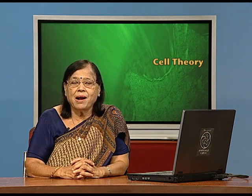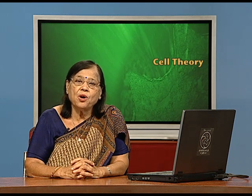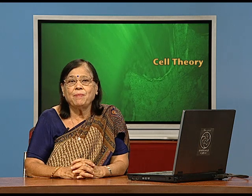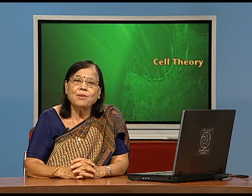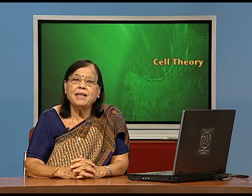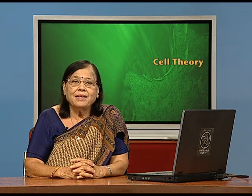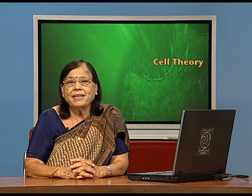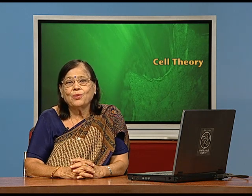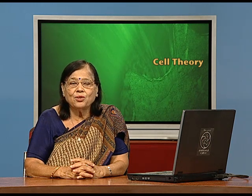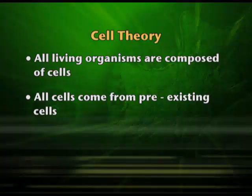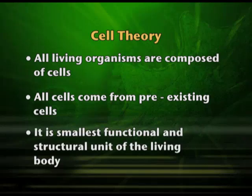This part of the theory discarded the original theory of spontaneous generation, because in olden days people saw that if cow dung lay for a long time, some worms would appear and they claimed spontaneous generation of life. That was not the case. Now we know a cell can come only from a cell. The third point of cell theory is that the cell is the smallest functional and structural unit of the living body.